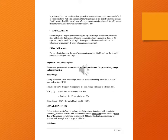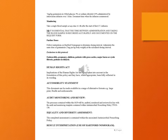Initial dose: 7 milligrams per kilogram gentamicin in 100 millilitres glucose 5% or sodium chloride 0.9%, administered by intravenous infusion over one hour. Document time when infusion commenced. Take a single blood sample at any time between 6 and 14 hours after the start of the first infusion. It is essential that the time between administration and taking the blood sample is recorded accurately and documented on the request form.